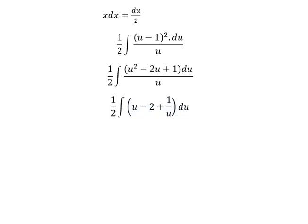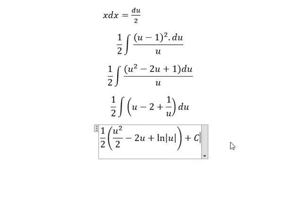And now, we can get the answer in here. The integral of u is u squared over 2. The integral of negative 2 is negative 2u. The integral of 1 over u is ln of absolute value of u. And we have plus c.